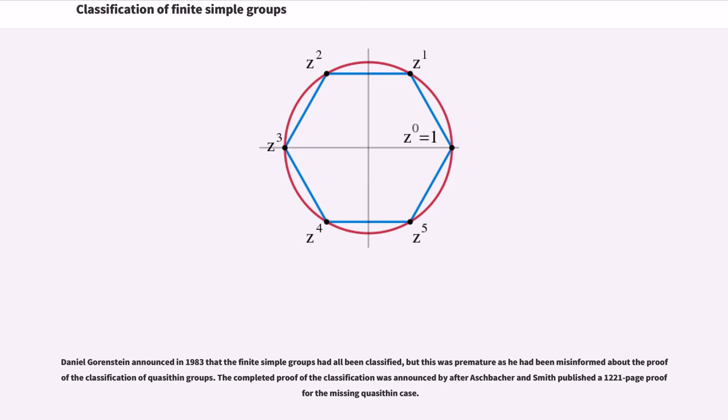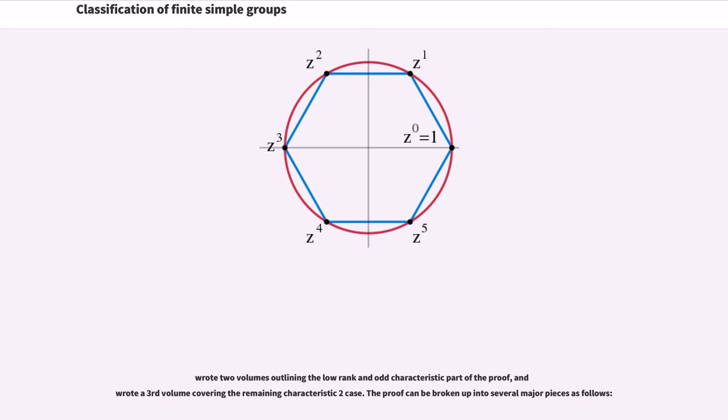They wrote two volumes outlining the low rank and odd characteristic part of the proof and wrote a third volume covering the remaining characteristic two case. The proof can be broken up into several major pieces as follows.